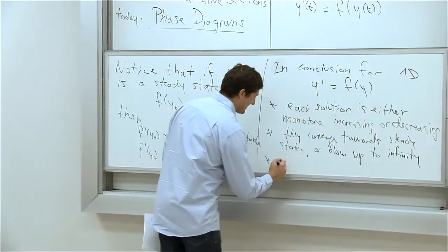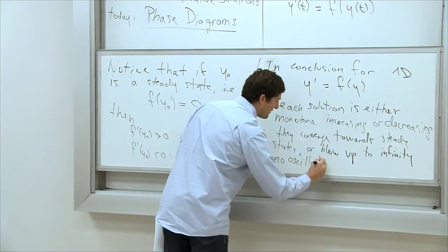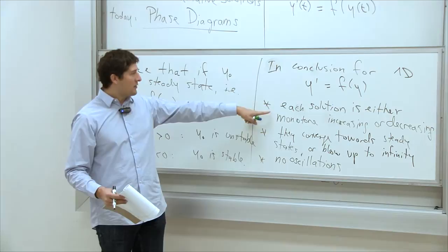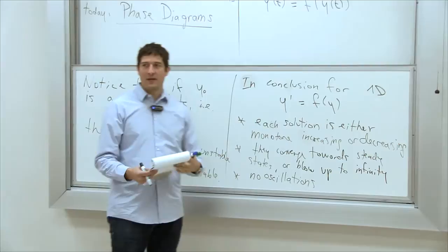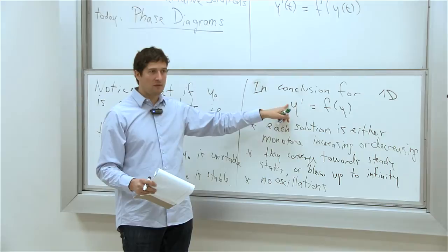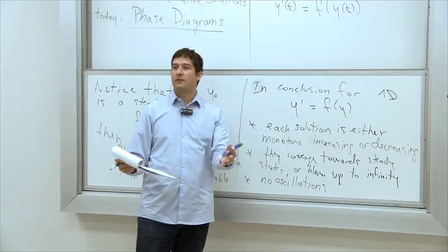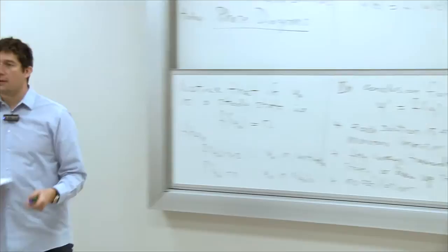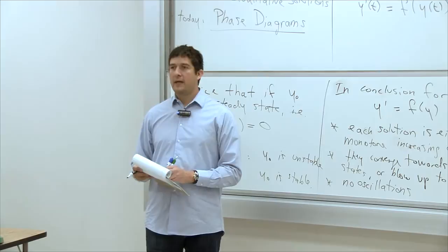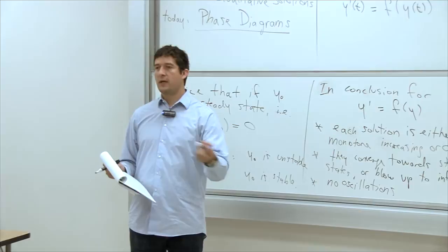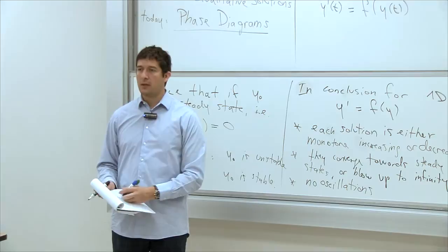We can confirm there are no oscillations from the property that each solution is either monotonically increasing or decreasing. This assumes only one derivative is involved. With a second derivative, like in a spring, you can have oscillations. Also, if you had two variables — like wolves and rabbits — you could have oscillations. But with only rabbits, the population cannot oscillate up and down over time.